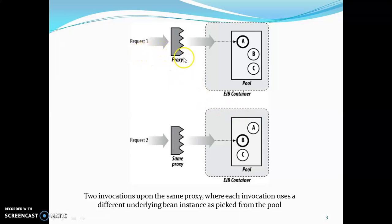The proxy handles the request as usual, and there is a pool of instances present inside the EJB container — instances A, B, and C. When request 2 is made through the same proxy, there is no guarantee that the same instance will be provided. Request 1 might be serviced by instance A, while request 2 is serviced by instance B. This is the behavior of the stateless session bean.